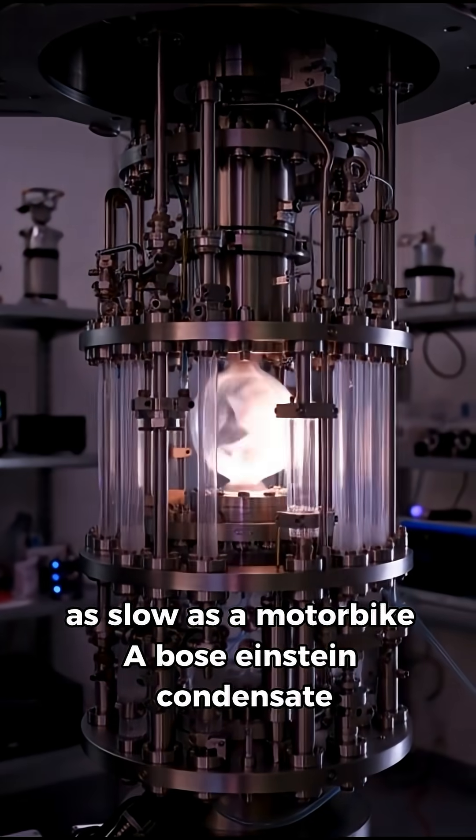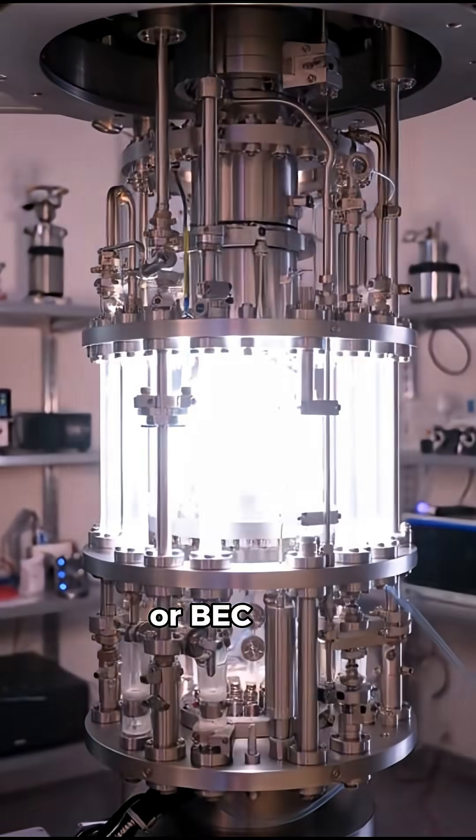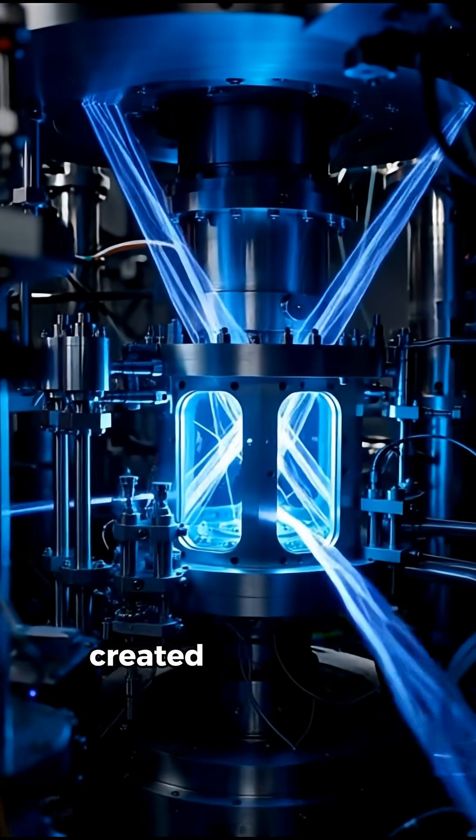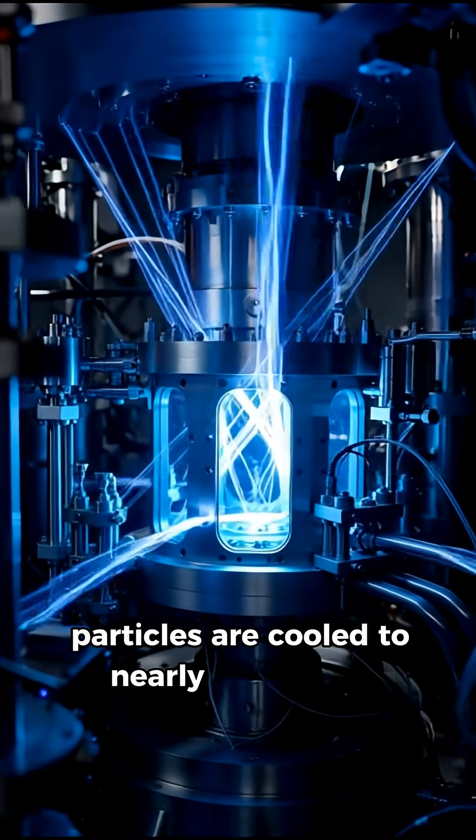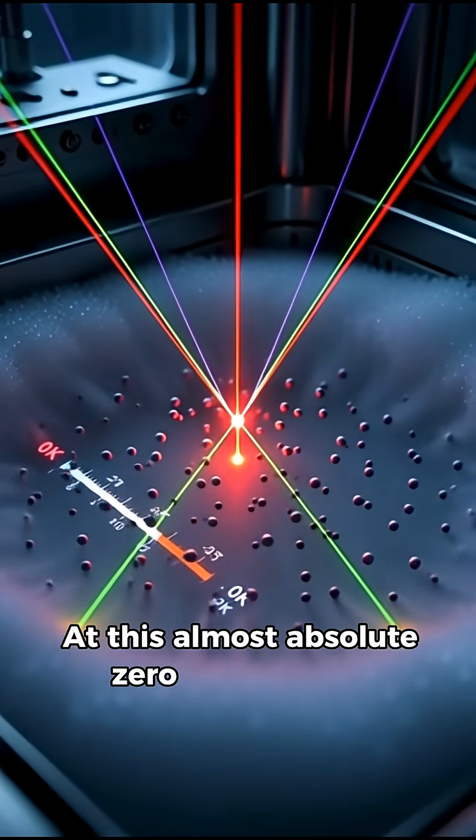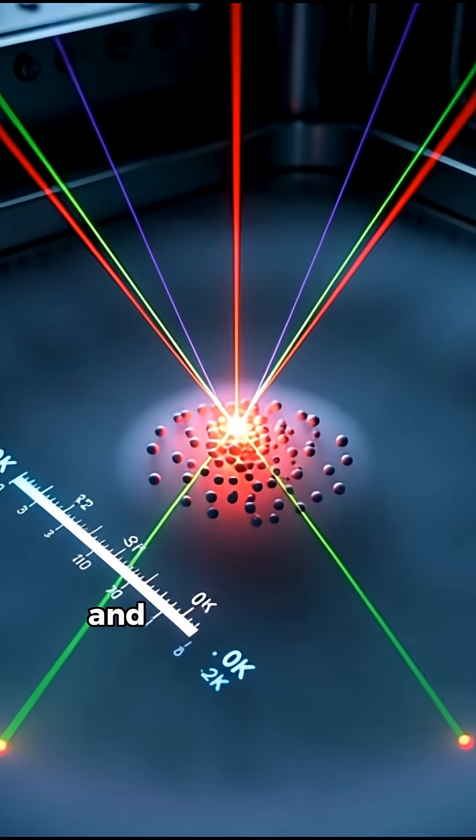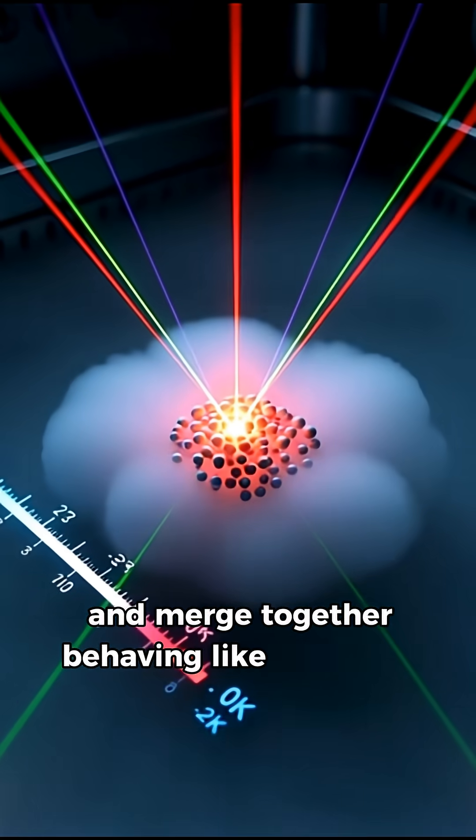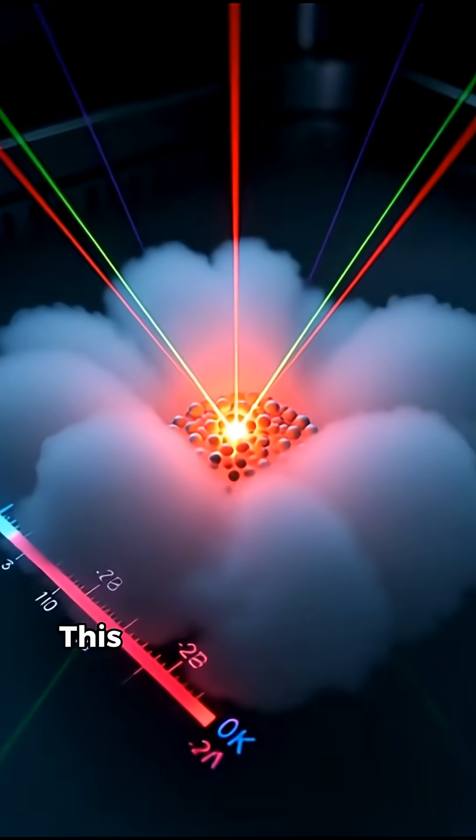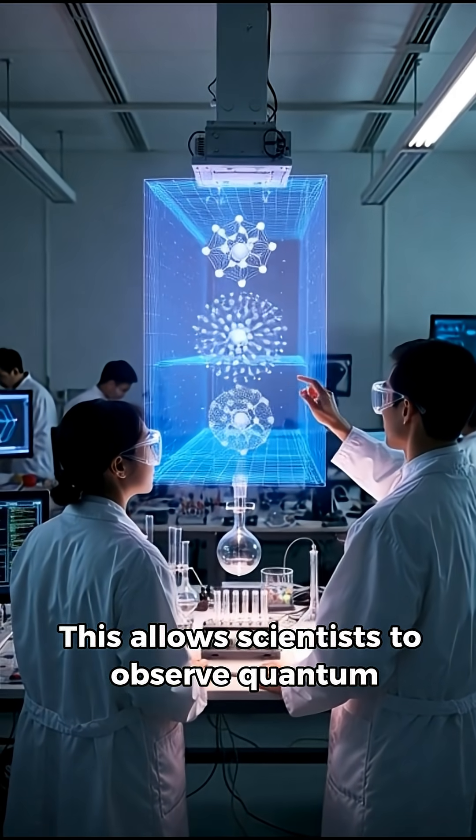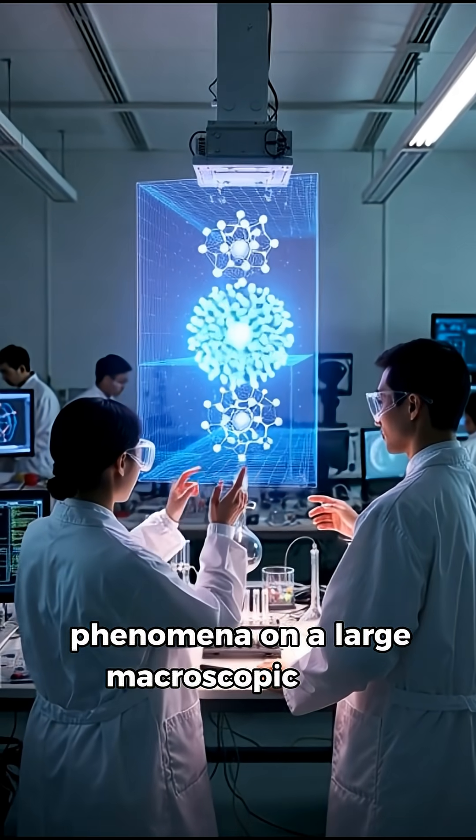A Bose-Einstein condensate, or BEC, is an extraordinary state of matter created when boson particles are cooled to nearly zero Kelvin. At this almost absolute zero temperature, the particles lose their individual quantum identities and merge together, behaving like one giant superatom. This allows scientists to observe quantum phenomena on a large, macroscopic scale.